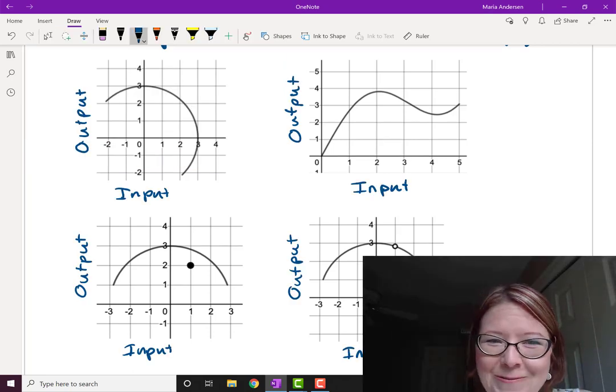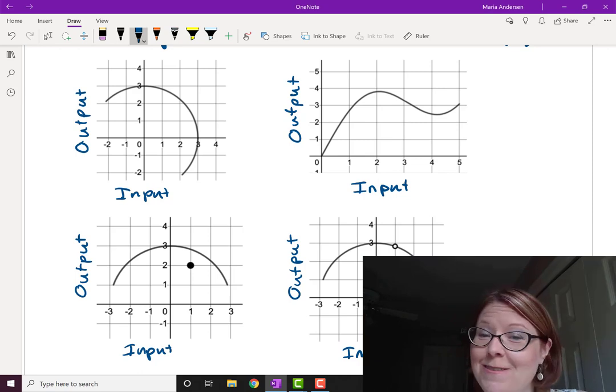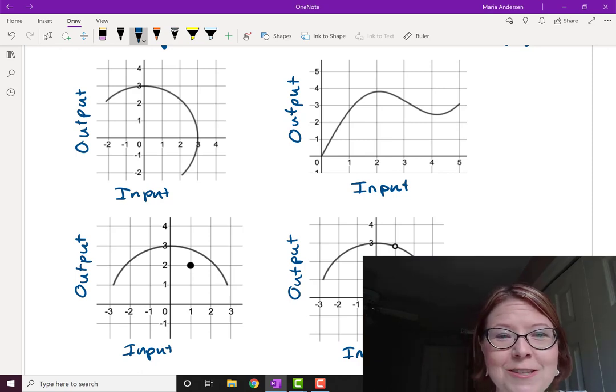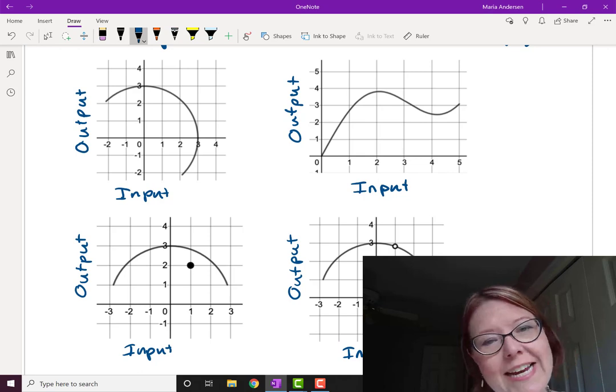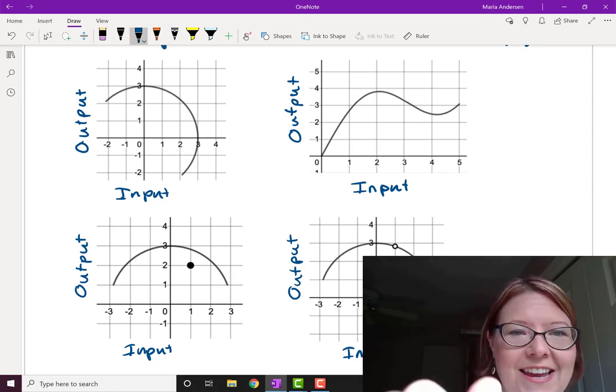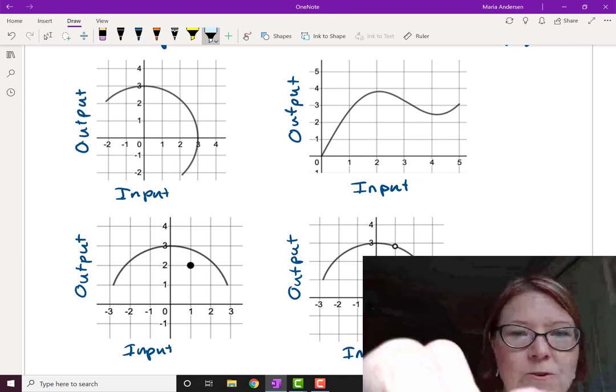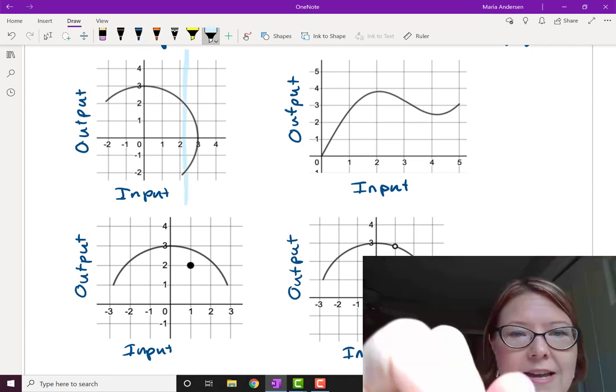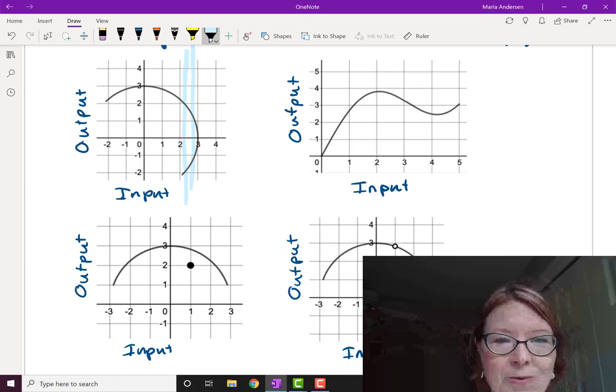Hopefully you've taken a guess and discovered that two of these graphs are not functions. The first graph is a semicircle that's been rotated 45 degrees to the right or clockwise.